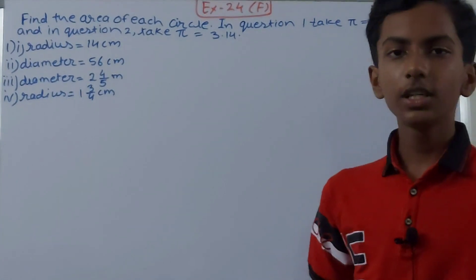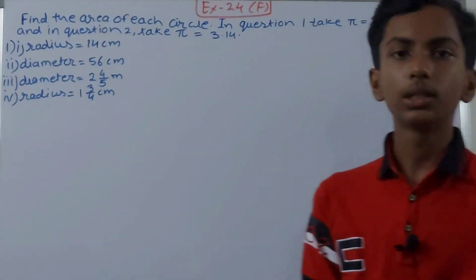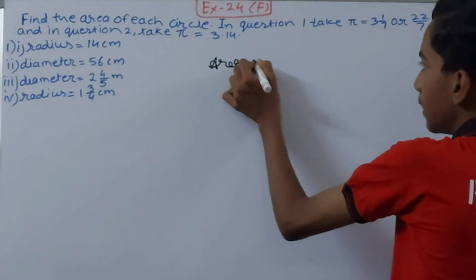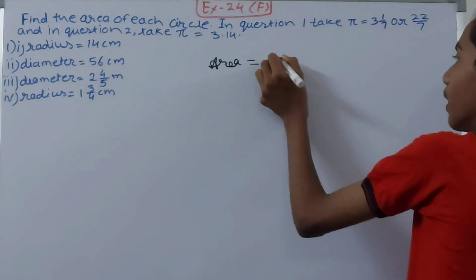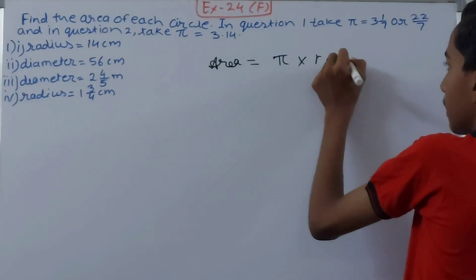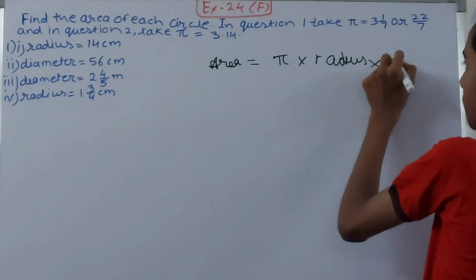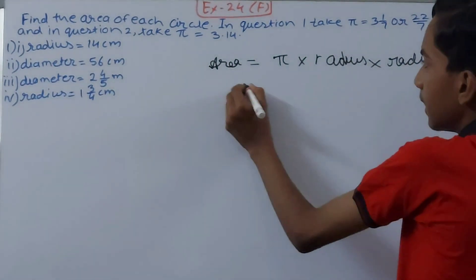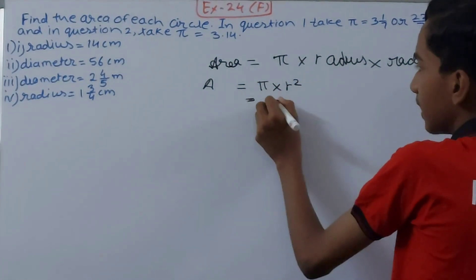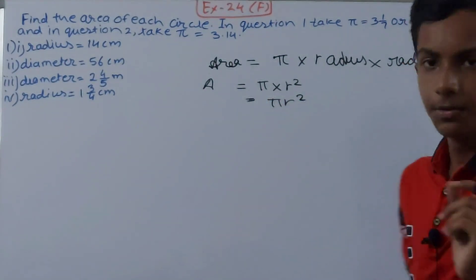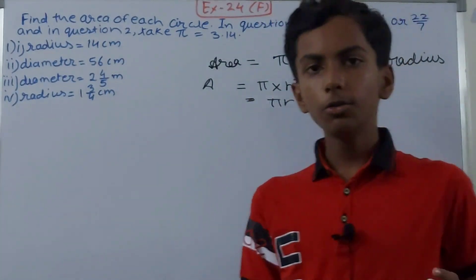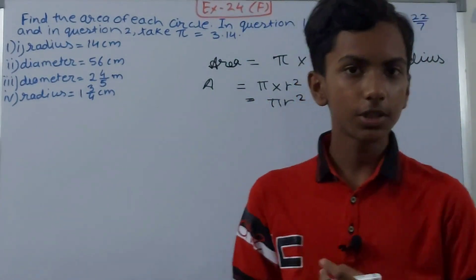Basically we have to find the area of the circle. How do we find the area of a circle? There is a very simple formula for that. Area of the circle equals to π into radius into radius. So two times we will be multiplying it, so area equals to π into r² or simply πr². That means we need to know the value of π, which will be given in the question, and the value of the radius of the circle.